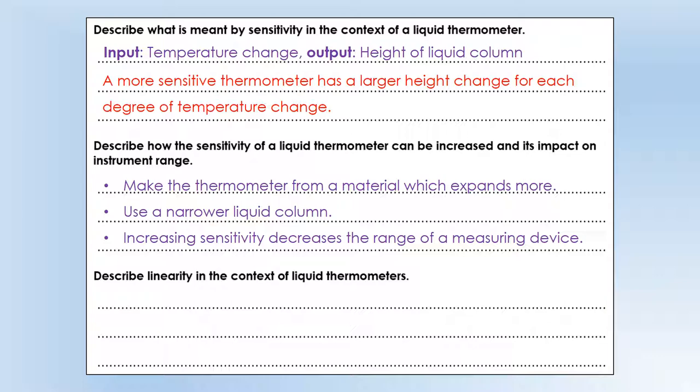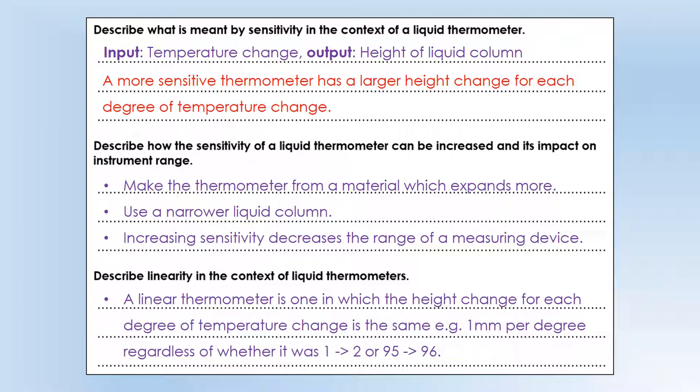So linearity is more straightforward. Essentially a linear thermometer is one in which the height change for each degree of temperature change is the same. So let's say for a given thermometer when we go from one to two degrees the height increases by one millimeter. And then if we go from 95 to 96 it also increases by one millimeter. So wherever the degree of temperature change is it changes by one millimeter in this particular case. That's what we mean by linearity. The other way of saying that is if we plot temperature against the height of our liquid it would be a straight line graph.